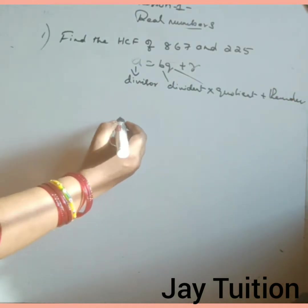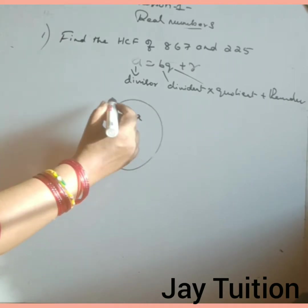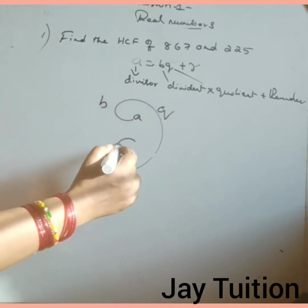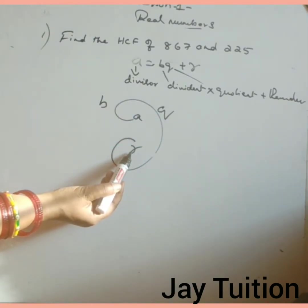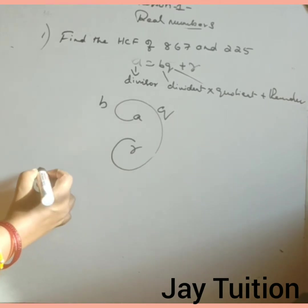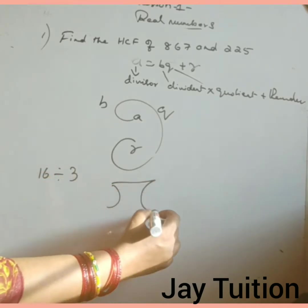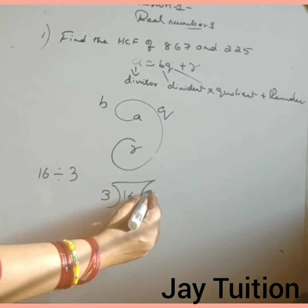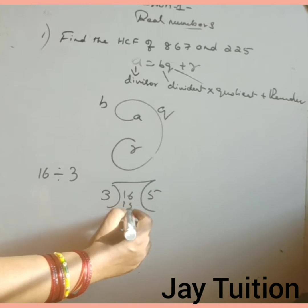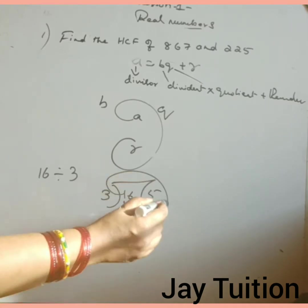I will give some examples so that you will understand better. This is A, B, Q, and remainder R. I will give a small number example: 16 divided by 3 goes 5 times, 15. Remainder is 1.